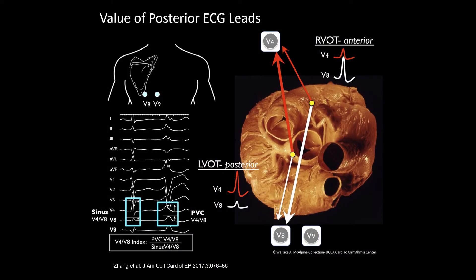This is an interesting study intended to prospectively evaluate the value of dedicated ECG posterior leads to create an anterior-posterior ratio to localize PVCs between the right and the left ventricular outflow tracts for catheter ablation. In this study, the standard V5 and V6 leads were placed posteriorly. The site of successful ablation was correlated with the ratio of the R wave in V4 to the R wave in V8.